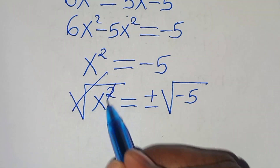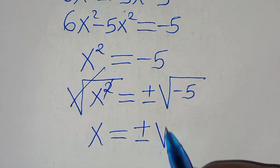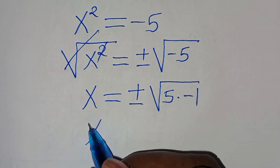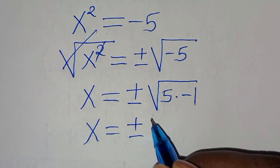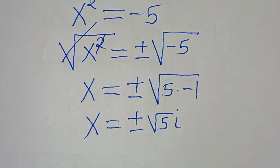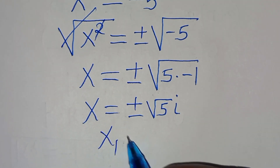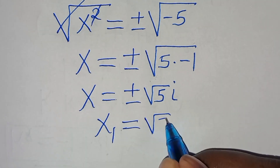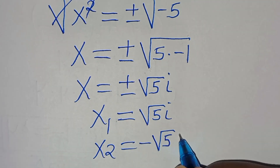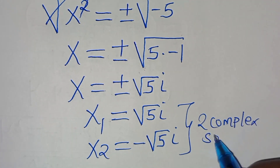We can express √(-5) = √5 · √(-1) = √5 · i. So x = ±√5·i, meaning x₁ = √5·i and x₂ = -√5·i. These are two complex solutions.